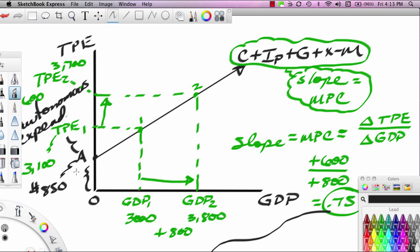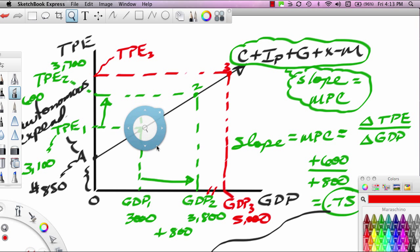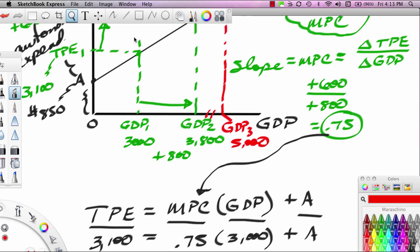A is 850, which means we can find any other point now on this expenditure line. Let's say that we're talking here about GDP 3, and let's say that this is 5,000. This is not drawn to scale. Our question is what would TPE3 be? What would the level of TPE be at a GDP level of 5,000? Well, we can use our formula.